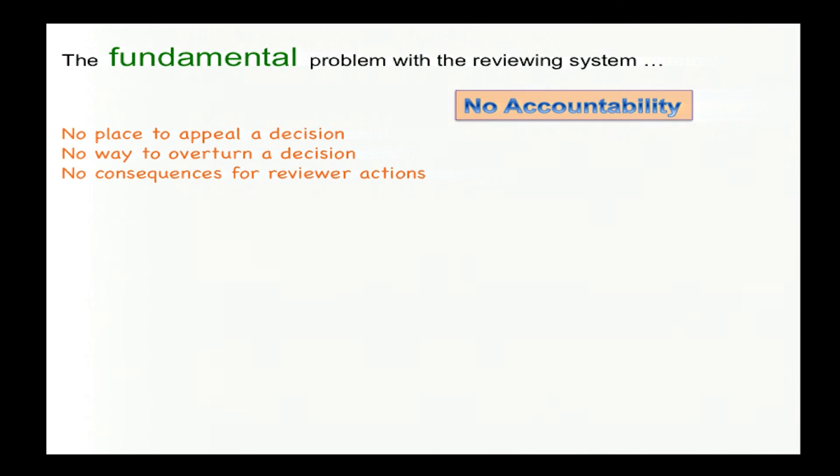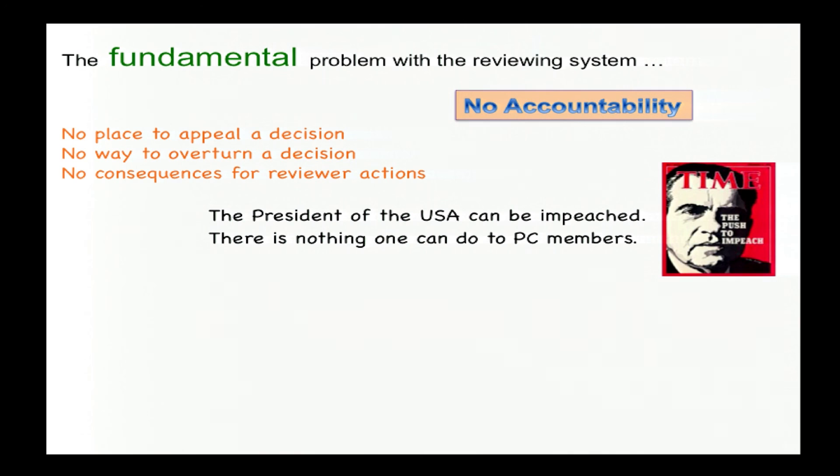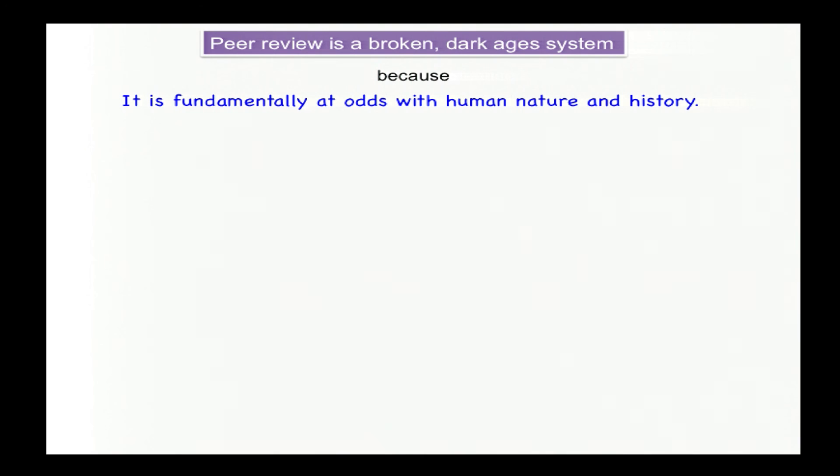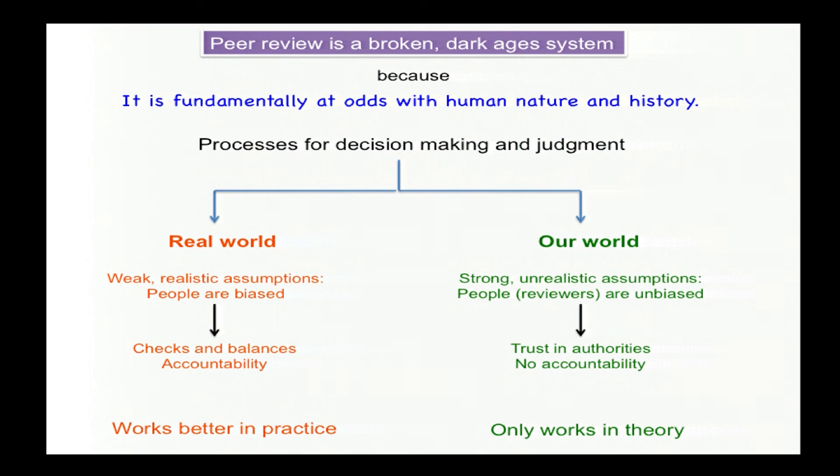And that takes me to what, from a practical perspective, is the fundamental problem with the reviewing process. Namely, that there's no accountability. There's no place to appeal a decision. There's no way to overturn a decision. And reviewers are subject to zero consequences, regardless of their actions. The President of the United States can be impeached, but there's nothing to touch a PC member, no matter what they do. But we have thousands of years of human history to tell us that when power is not balanced by accountability, it's going to get abused, even by the best people with the best intentions. In other words, what makes peer review, as we practice it, a blatantly broken, dark ages system, is that it is at odds with the essence of human nature and the lessons of history.